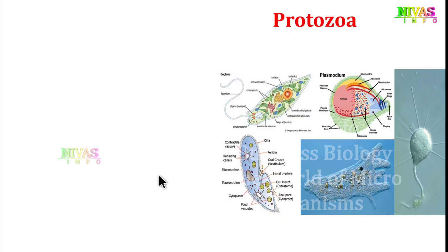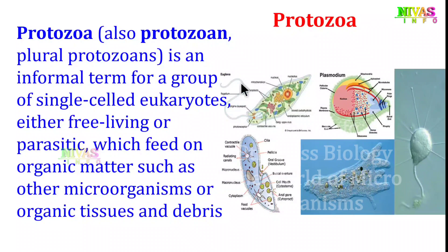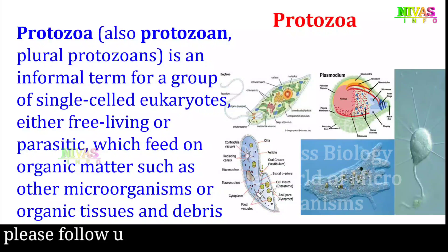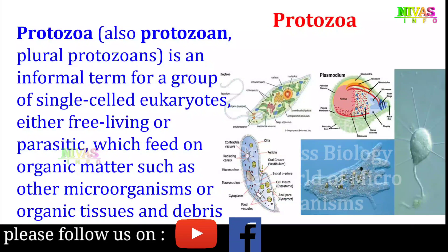Protozoa is an informal term for a group of single-celled eukaryotes, either free-living or parasitic, which feed on organic matter such as other microorganisms or organic tissues and debris. Parasitic means it depends on other microorganisms to survive.